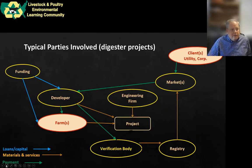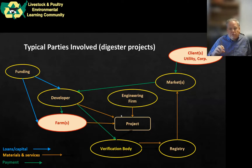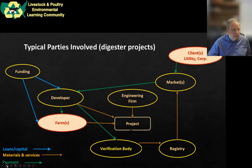This schematic shows a lot of what's going on. The key thing to focus on is that funding is a very important part and the markets are very important. Beyond the verification body, developer, and farms, there are outside parts that are critical for successful projects — having the funding to put in the systems and having a market so you can sell the credits after you're done generating them.